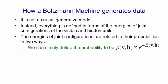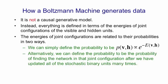Or you can define it procedurally by saying we're going to define the probability as the probability of finding the network in that state after we've updated all the stochastic binary units for enough times so that we reach thermal equilibrium. The good news is that those two definitions agree.